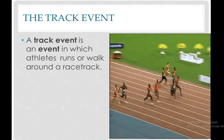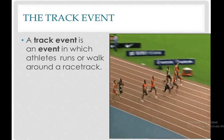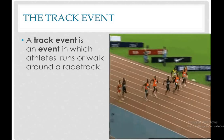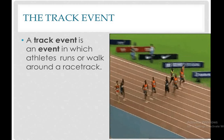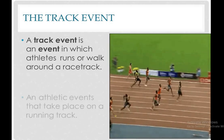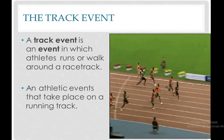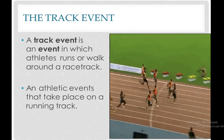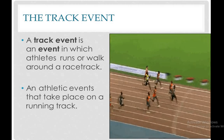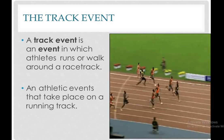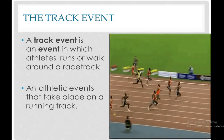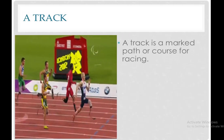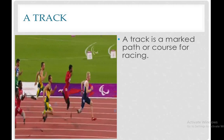What is track events? Track events is an event in which athletes run or walk around a race track. A race track is a track or path placed for an athlete to run on. We can also say that a track event is an athletic event that takes place on a racing or running track. From the picture we have seen, an athlete runs or walks on a racing track, which is a marked path or course for racing.